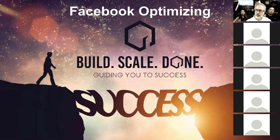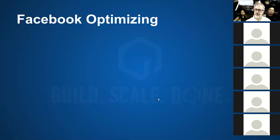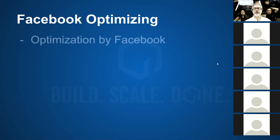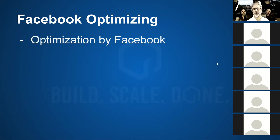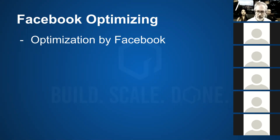Optimizing on Facebook is done basically in two big ways. There are two ways we're going to optimize: we're going to have optimization going on by Facebook — that is when Facebook does its thing with the pixel and makes the campaigns go better and better as they go.